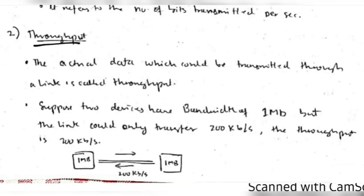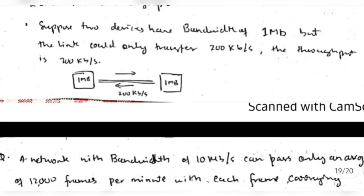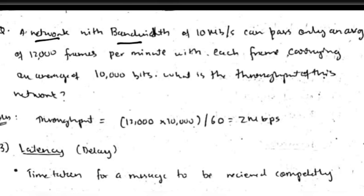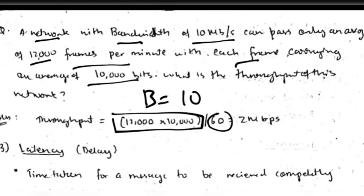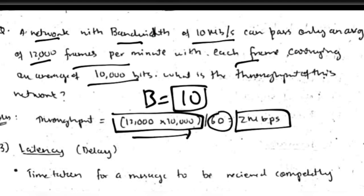Throughput is important: a device may have a bandwidth of 1 Mb, but the link must also support that transfer rate, which isn't always the case. Example: a network with bandwidth of 10 Mb/s can pass only an average of 12,000 frames per minute, each frame carrying 10,000 bits. Total bits divided by 60 seconds gives 2 Mb/s throughput. Even though each device has 10 Mb/s bandwidth, only 2 Mb/s can actually be transferred due to network link limitations.